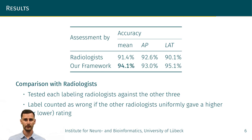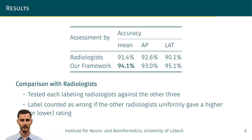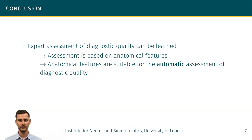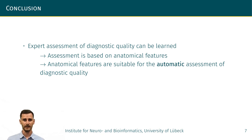To get an estimation of how accurate the labels are, we tested each labeling radiologist against the other three. We count a label as wrong if the other three radiologists uniformly gave a higher or lower rating. The mean over the four radiologists resulted in an accuracy of 91.4%, which is about 2.5 percentage points worse than our framework. In total, we could show that expert assessment of diagnostic quality can be learned, and since this assessment is based on anatomical features, these are therefore suitable for automatic assessment of diagnostic quality.